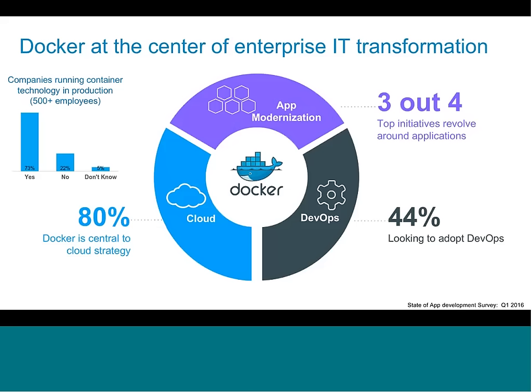Before we delve into Docker Data Center, it's important to understand the context around it. Enterprise teams are in the midst of what's been called digital transformation, and Docker is really at the center of that. There are three core aspects: app modernization — moving from monolithic architectures to microservices, containerizing legacy applications — with three out of four organizations looking to modernize today. The second piece is DevOps, breaking down traditional barriers between developer and IT operations teams, with 44% of enterprise teams looking to adopt DevOps.